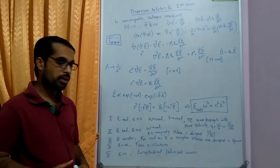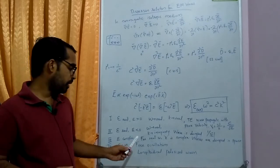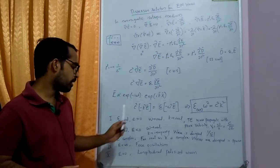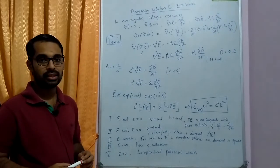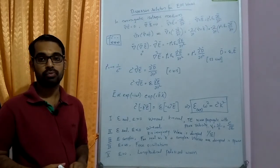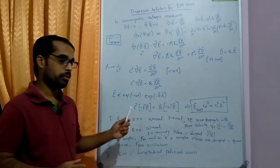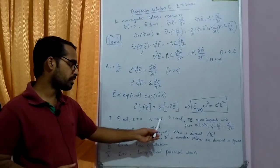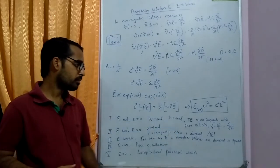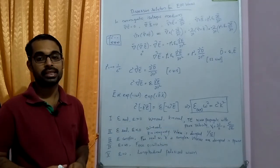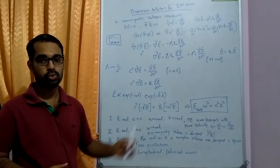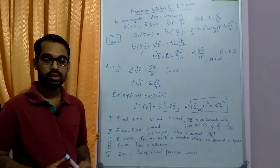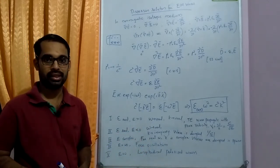We will consider two cases: transverse and longitudinal polarized wave propagation in plasma medium. In the next section, we will consider the first case where a transverse electromagnetic wave propagates, corresponding to the transverse electromagnetic wave modes in plasma medium.